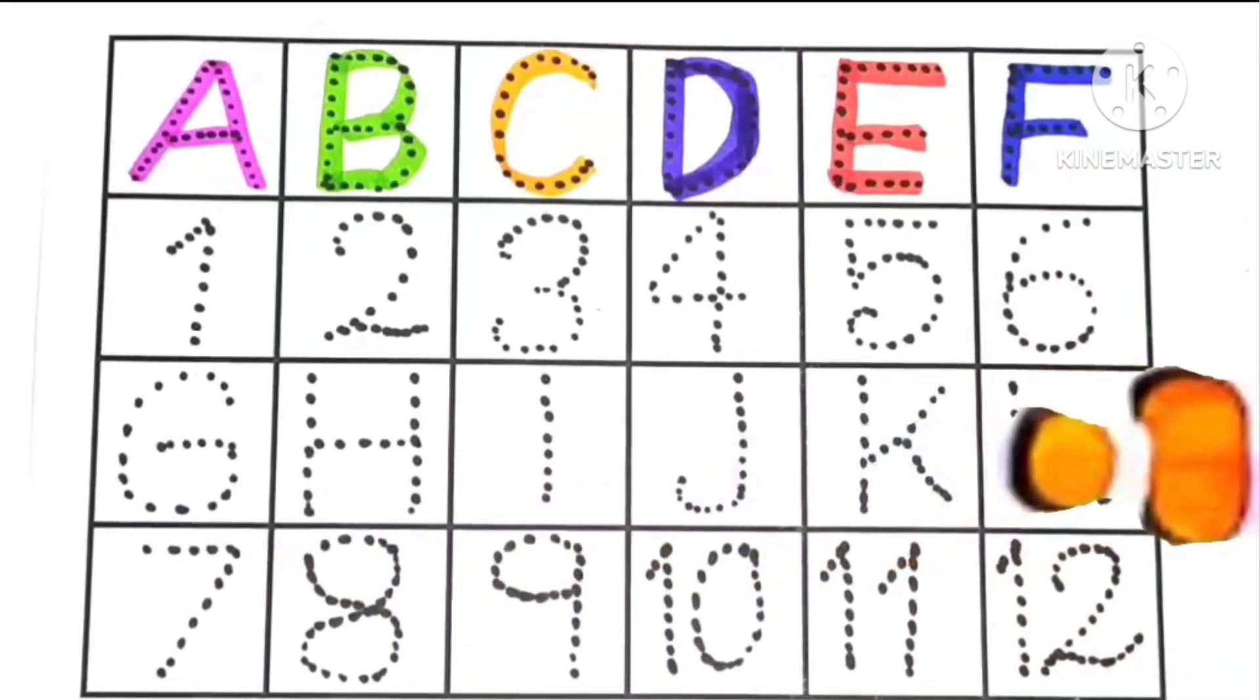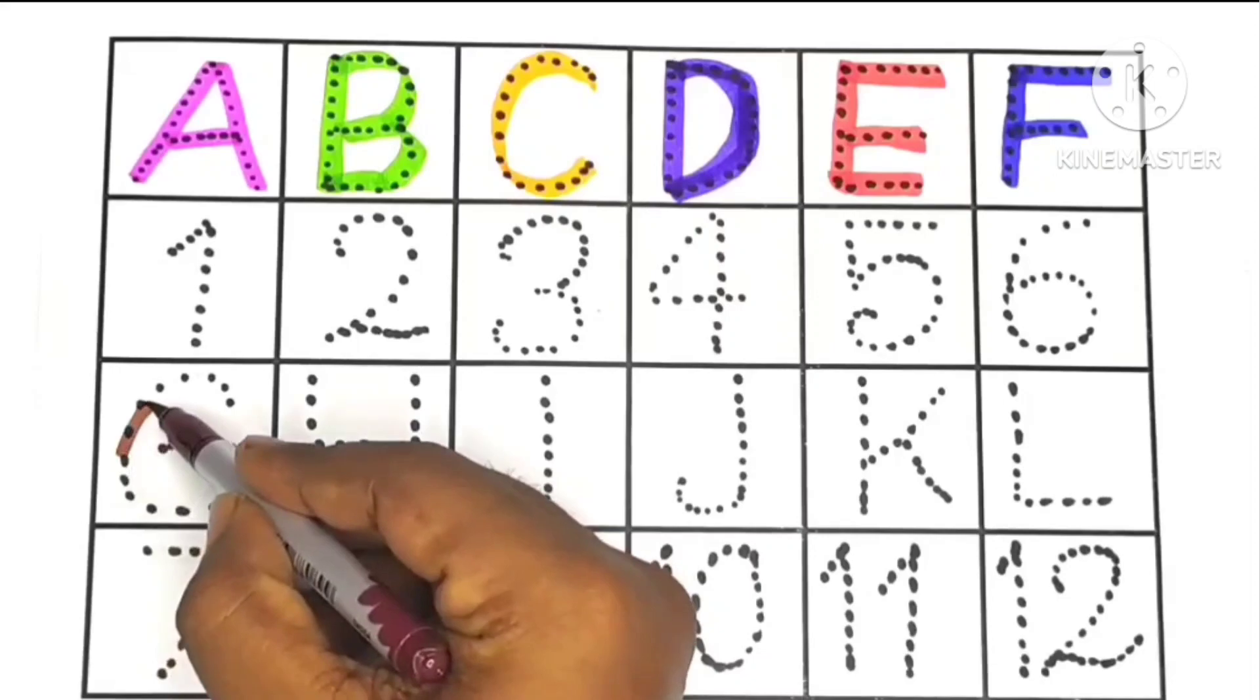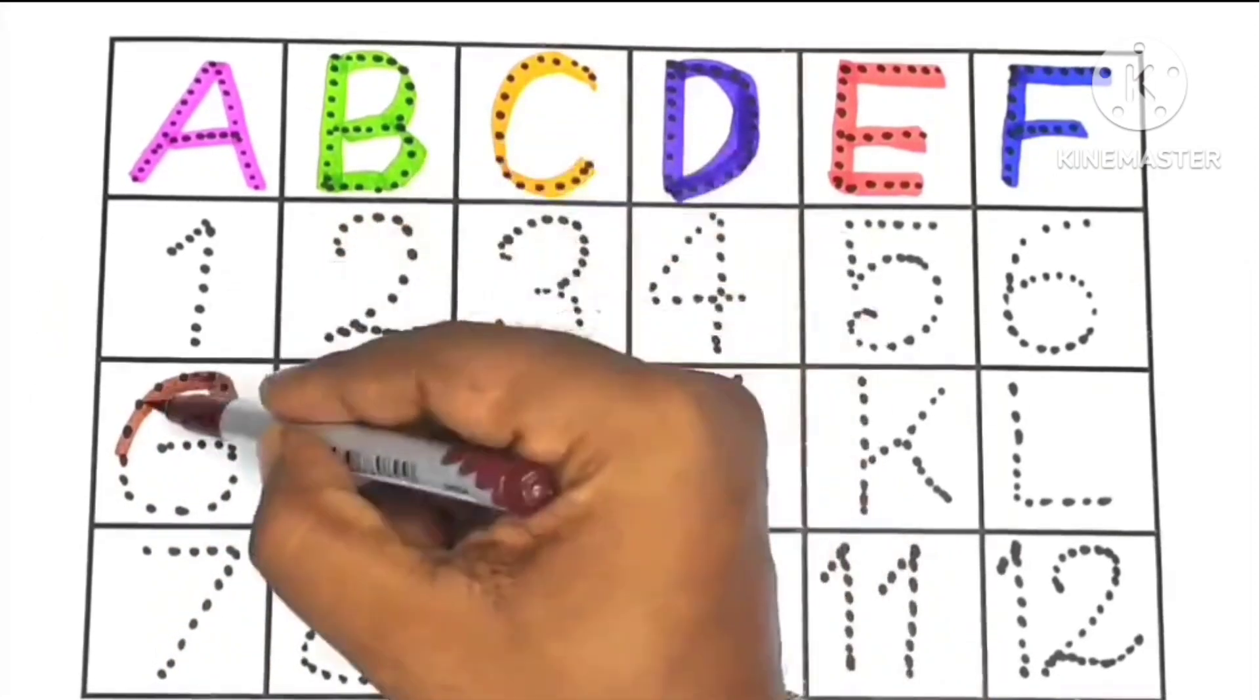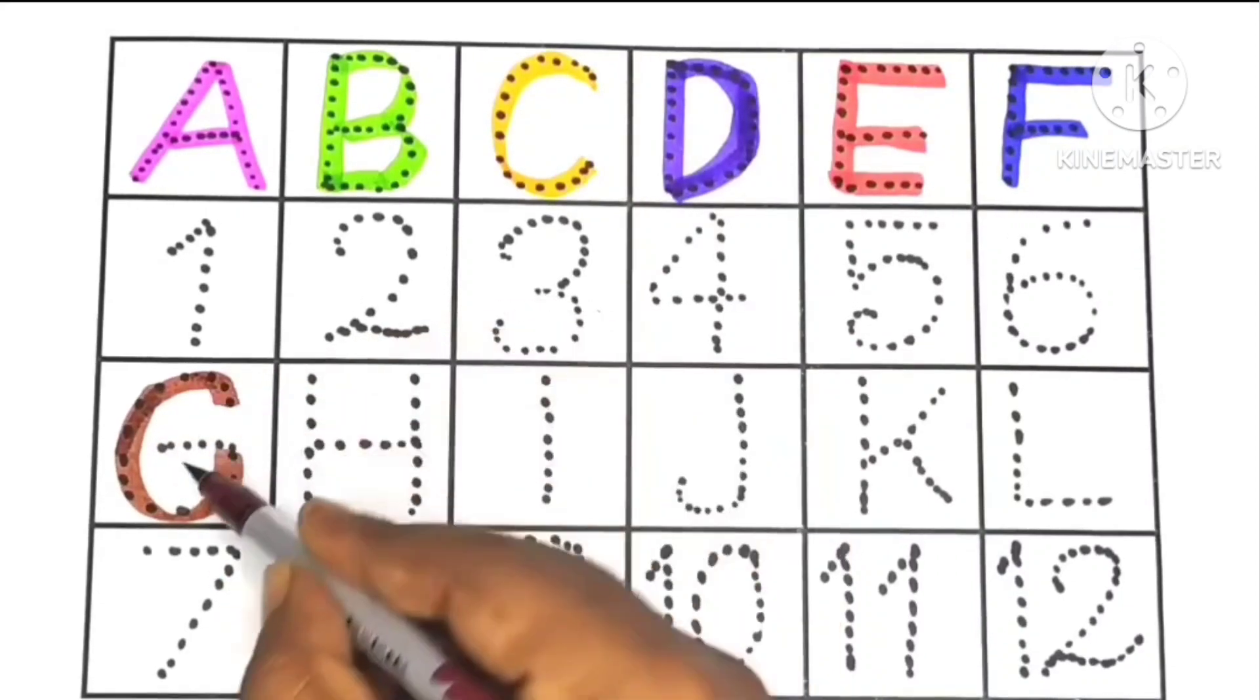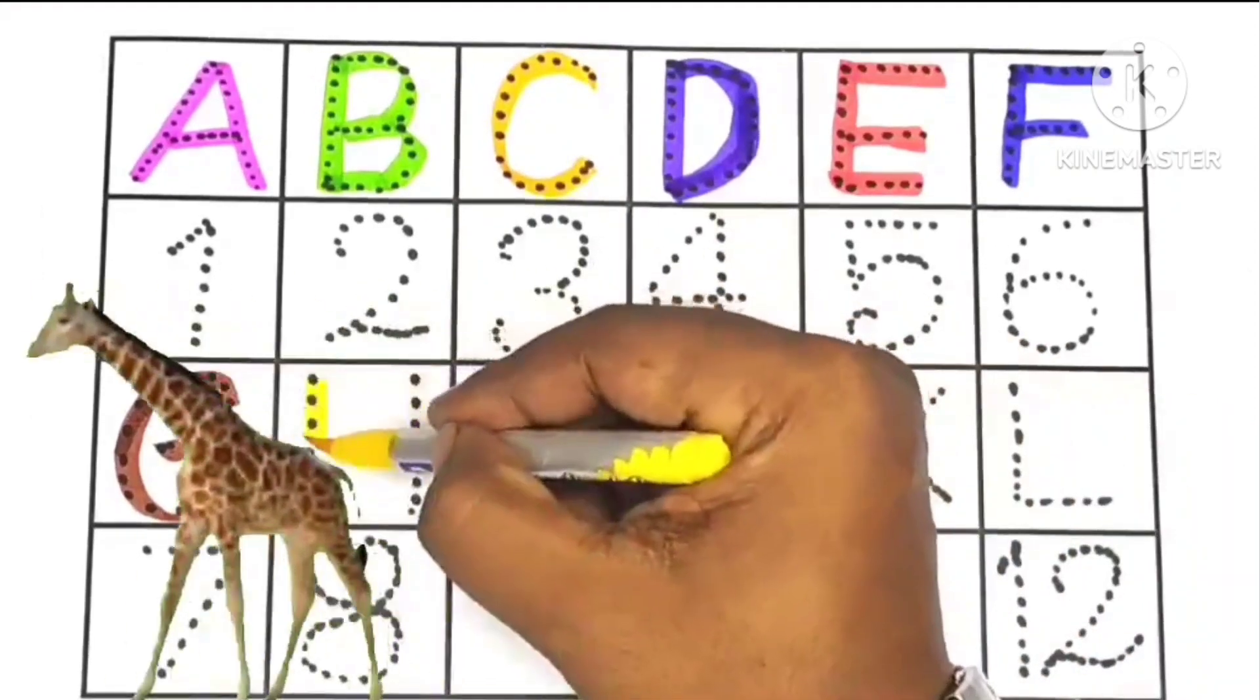Frog. F ke baad aata hai G, G for goat, G for grass, G for goat, G for giraffe. H...